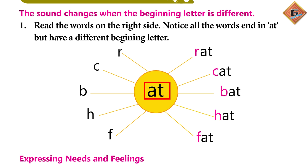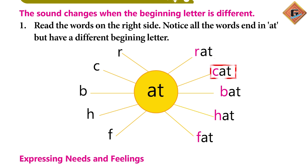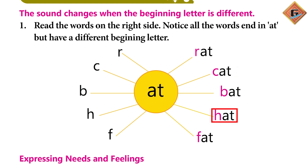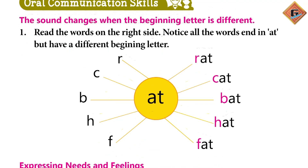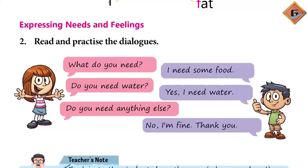The words shown are: R-at → rat, K-at → cat, B-at → bat, H-at → hat, F-at → fat. Aap chalte hain agle question pe.